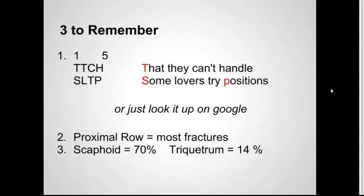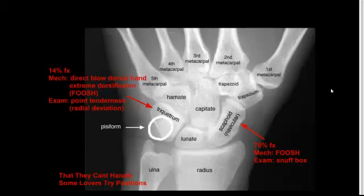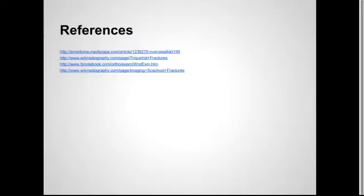Three things to remember: we all have our mnemonic, so try to remember some of the bony landmarks I showed, or just look it up on Google. Remember that your proximal row has the most fractures, with scaphoid at 70% and triquetral bone at 14%. Here's a summary slide of everything I just said. Thanks very much for joining us on EM in 5 today. Bye.